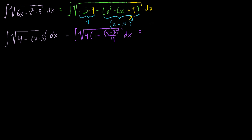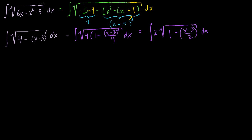Let me simplify even more. If I take the 4 out of the radical, it becomes 2 times the square root of 1 minus (x minus 3) over 2, all squared, dx. Squaring (x minus 3) over 2 gives (x minus 3) squared over 4. I have done no calculus so far — I've just algebraically rewritten this indefinite integral into an equivalent form. But now all of a sudden this looks like a form I recognize.